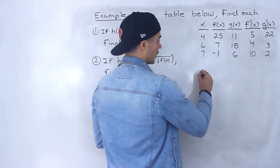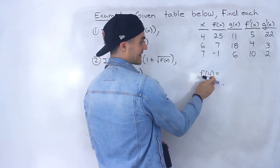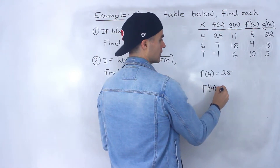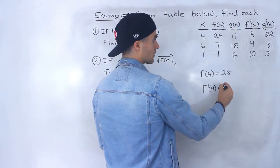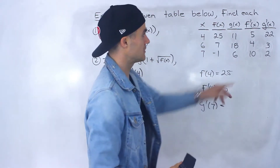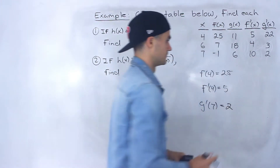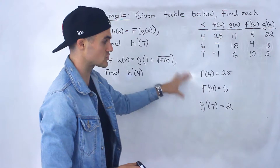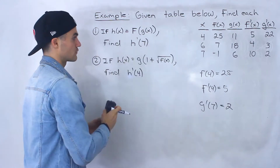For example, what would f of 4 be? Well, this would be the value of f of x at an x value of 4, so that's going to be 25. Or what would f prime of 4 be? It would be 5 — the derivative of f at that x value of 4. What would g prime of 7 be? It's going to be the value of g prime of x at an x value of 7, so it's going to be 2. That's how the table is used, and we're going to end up getting a bunch of these expressions when doing these questions — we just plug them in from the table.